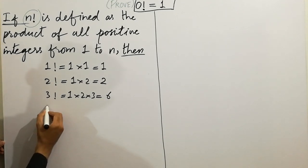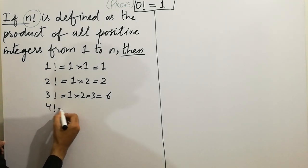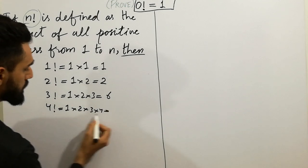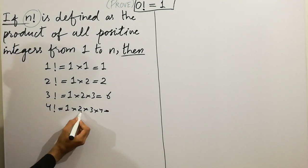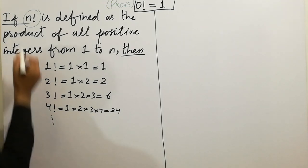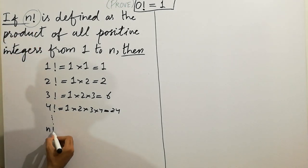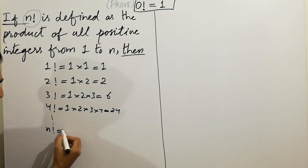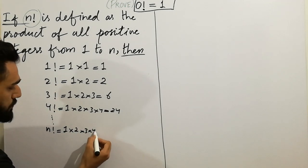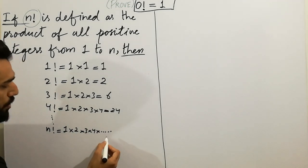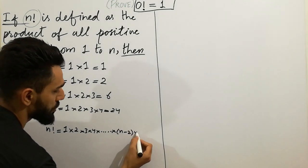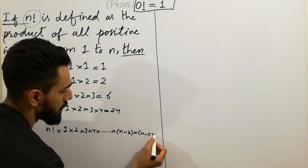And 4-factorial will be 1 cross 2 cross 3 cross 4, which equals 24, and so on. You will get n-factorial equal to 1 cross 2 cross 3 cross 4 cross ... cross n-2 cross n-1 cross n.